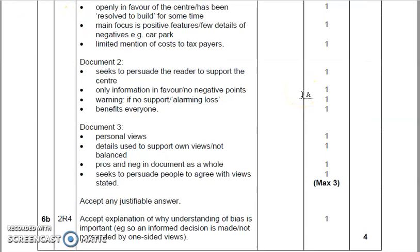It says here: accept any explanation as to why understanding of bias is important. The main reason why identifying bias is important is as we've already discussed — you need to know whether a source is biased or not because you need to make an informed decision. If you're reading a document and it's vastly in favour or against something, you also want to know what that document is missing out on. If you know a text is biased, it helps you make an informed decision so you're not persuaded by one-sided views. It's a fairly common sense question — it's fairly self-evident why it's a good idea to be aware of bias.